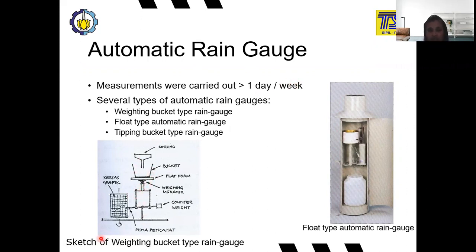Here we have a sketch of the weighing bucket type of rain gauge. There are usually three types of automatic rain gauge: weighing bucket, float type, and tipping bucket. In the weighing bucket, rainfall enters the bucket and a weighing scale records the weight, drawing a graph automatically with a pen. From the graph, we can see the height of the rainfall. There is also the siphon rain gauge: the principle is similar, but when the water level rises above the tip of the siphon, water flows out, and the recording pen also drops back to reset, allowing continuous measurement.